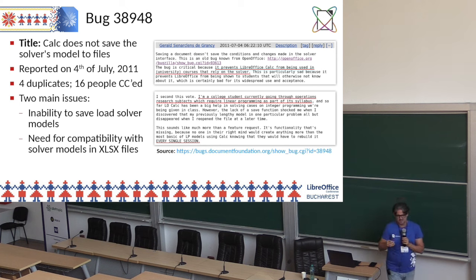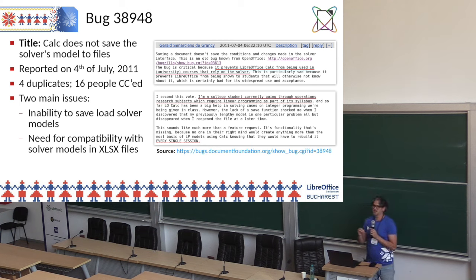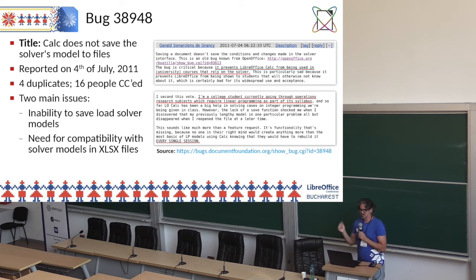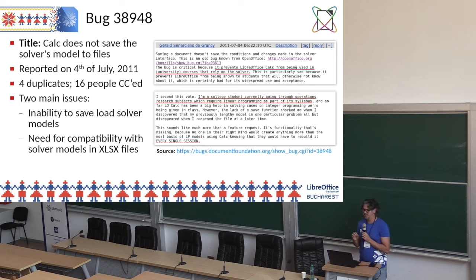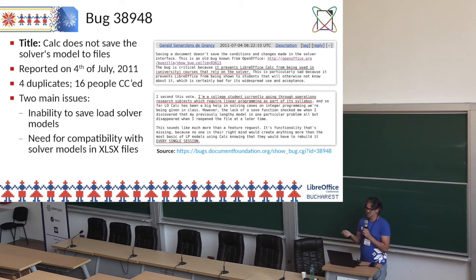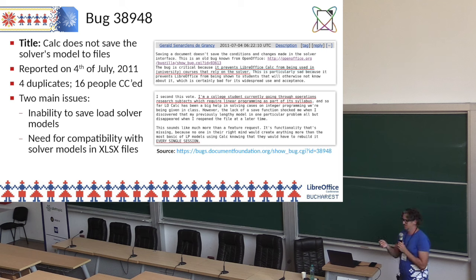Let's discuss bug 38948, which was the bug report that concentrated discussions and proposed solutions for this issue. It was reported back in 2011, had four duplicates, and 16 people copied on it. People complained about two main issues: first, the lack of saving support; and second, the need for compatibility with Excel files — because if a user creates a solver model in Excel, it should be importable in LibreOffice and vice versa.